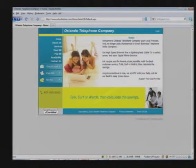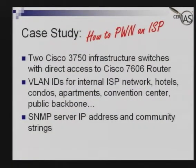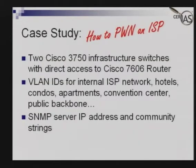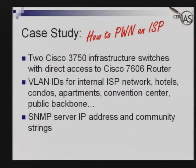I contacted the ISP and told them their fly was down, essentially. They offered me money for finding it, which they never actually sent, but they were very happy the information came out. They had added these devices to their network and simply didn't lock them down. What was accessible: two Cisco 3750 switches, a Cisco 7606 router, VLANs for all their customers, and SNMP addresses. You could imagine what you could do with that traffic — anything you wanted.